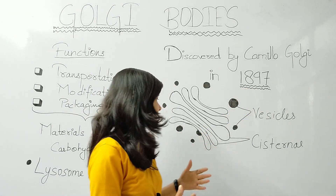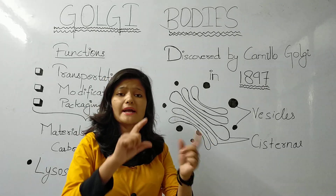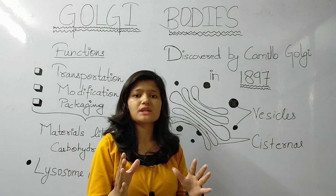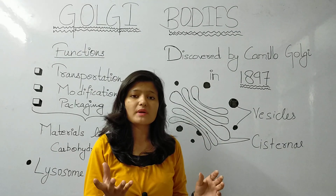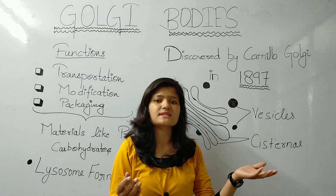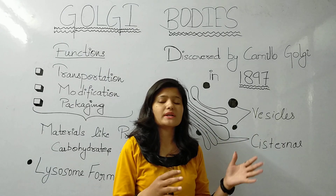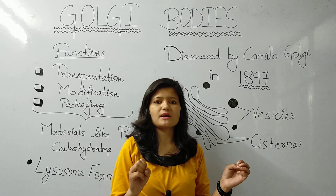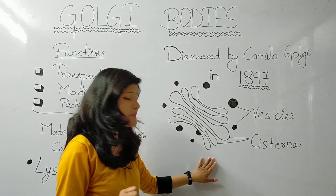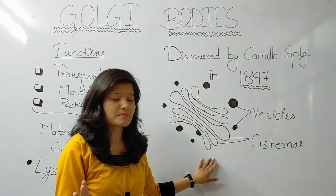The Golgi bodies are very close to the endoplasmic reticulum. This is an endoplasmic reticulum organelle. We studied this in the last lecture. The Golgi bodies are very close to the endoplasmic reticulum and they are present in the cytoplasm.